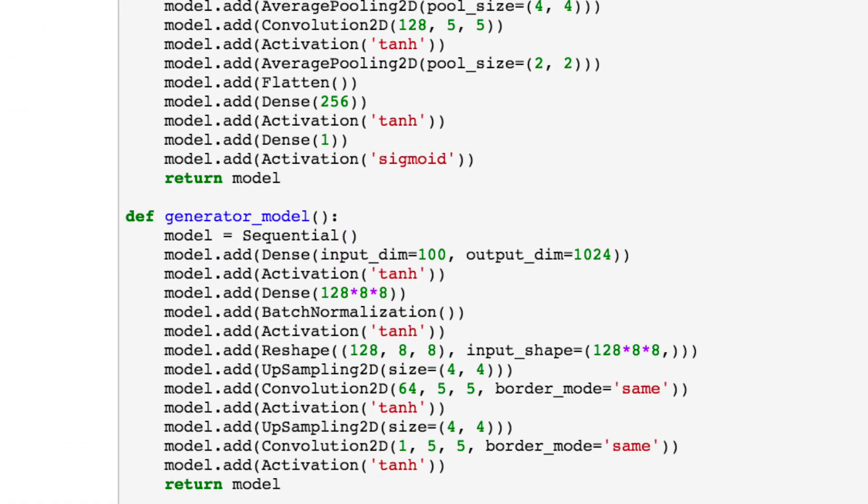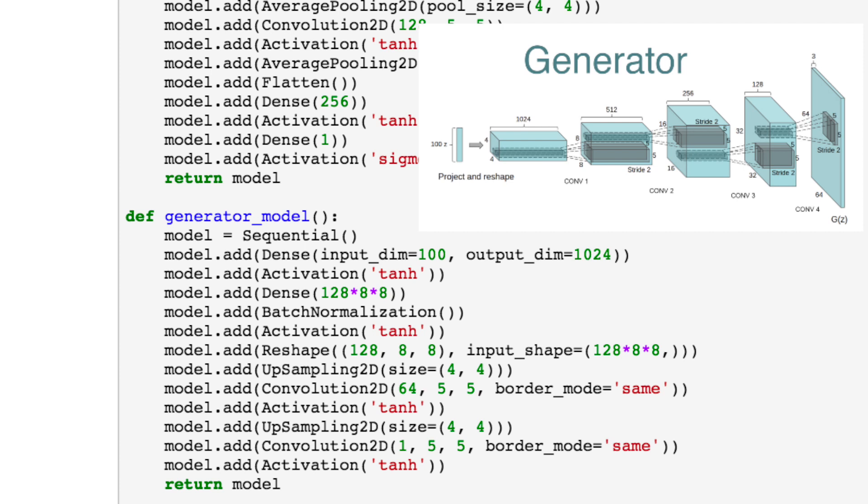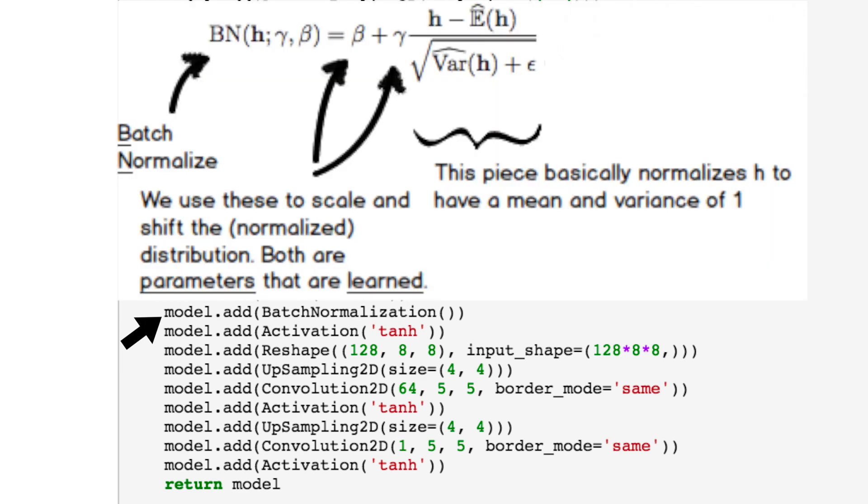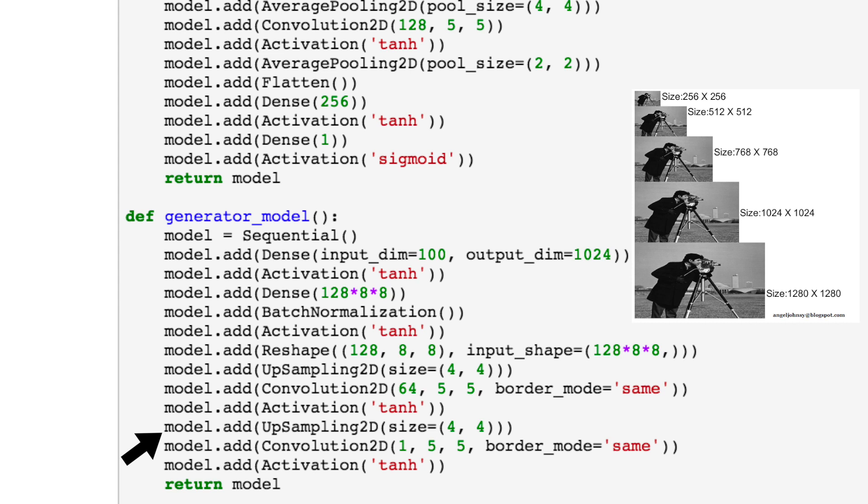Next, we'll define our generator, which performs similar operations, but in the reverse order. Since it's fed random numbers as its input, it converts them into an image by first going through two fully connected layers, with their own associated activation functions. Batch normalization will apply a transformation that maintains the mean activation close to zero, and the activation standard deviation close to one. This allows for faster learning and higher overall accuracy. Then we apply two convolutional blocks that will eventually output an image. Upsampling will convert our image into a higher resolution.